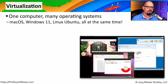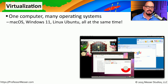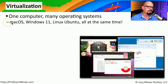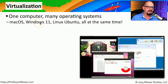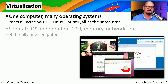With virtualization, you can have one physical device and run multiple operating systems on that same computer. For example, you might have a computer that runs macOS, and you can run Windows 11 and Linux all at the same time on that same system.